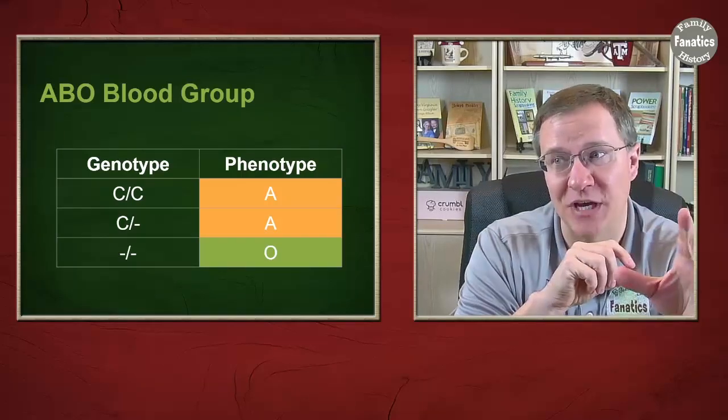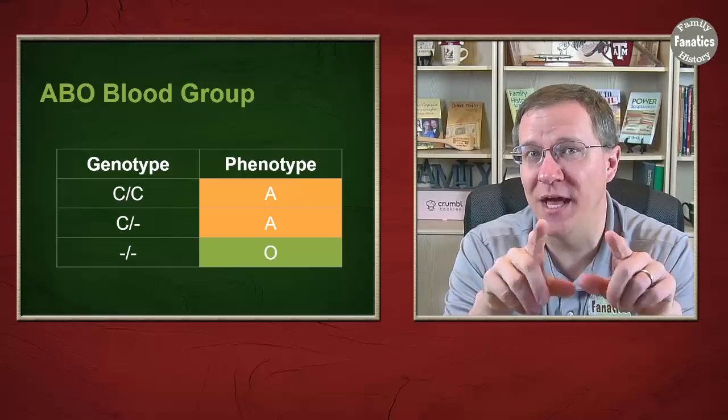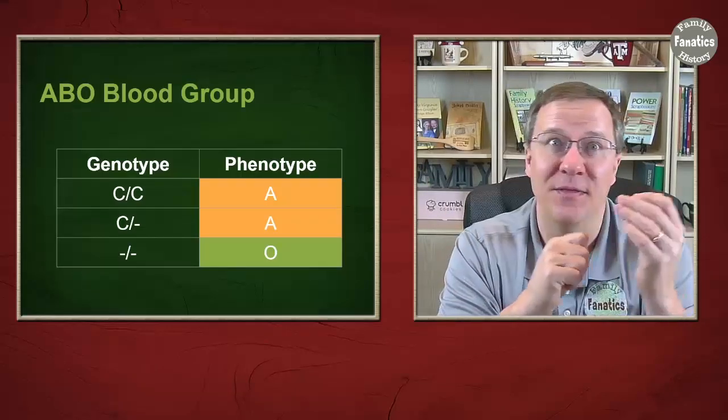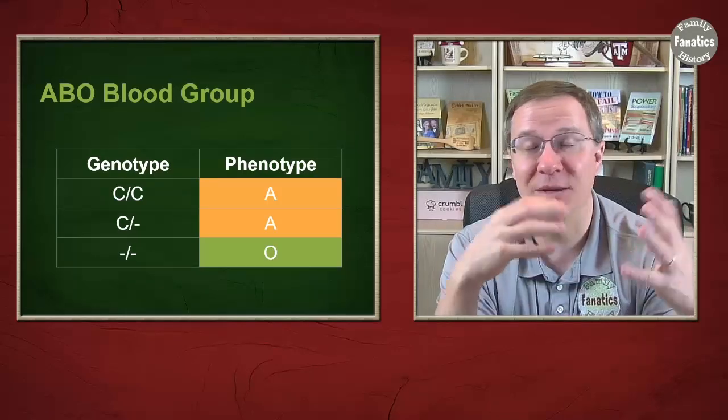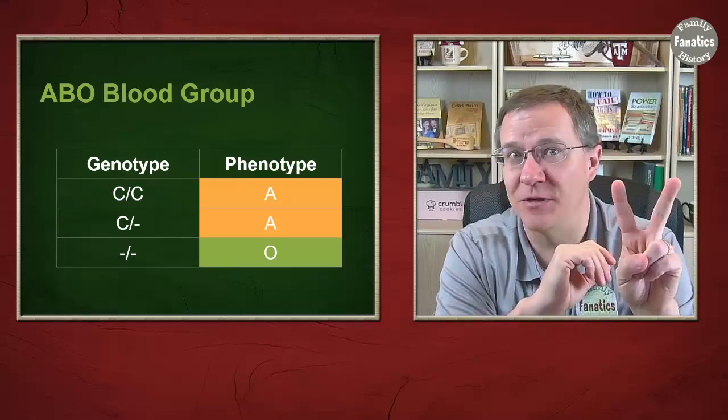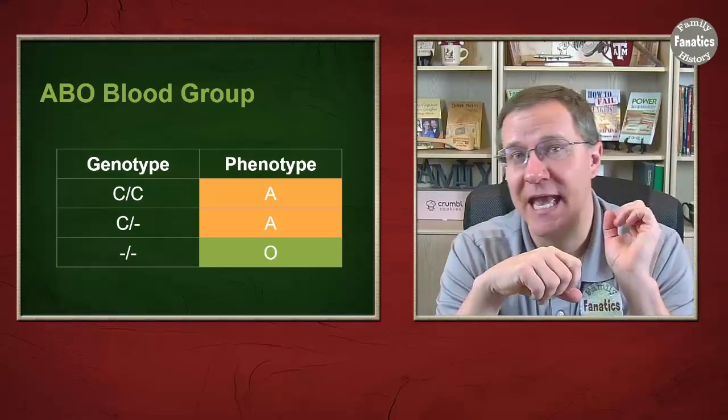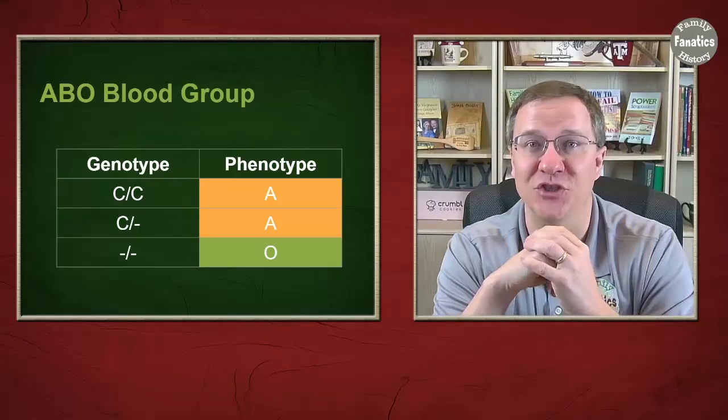We see that this genotype feeds into the phenotype, but it's not necessarily a one-to-one. That has to do with recessive or dominant genes, as well as in some cases environmental factors. In this case, we have two phenotypes—A blood type and O blood type—but they're made up of three different genotypes.